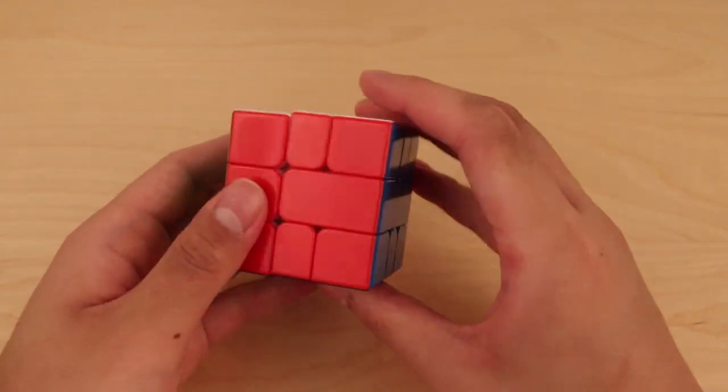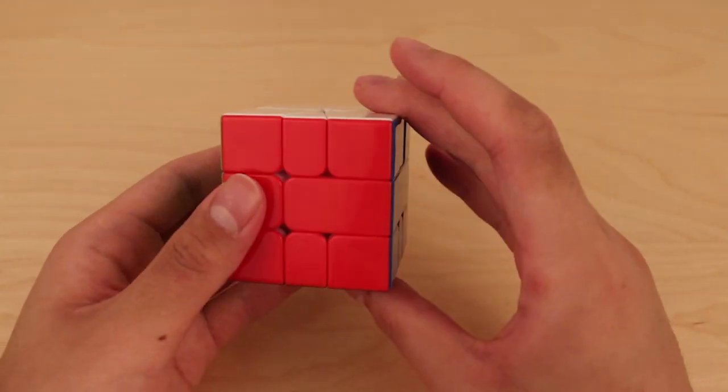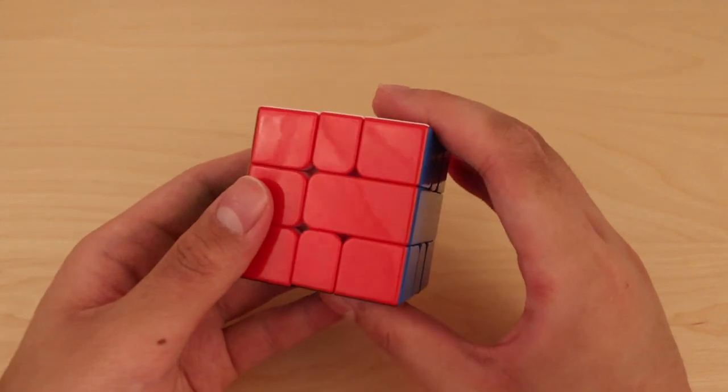If you're turning like this though, how do you do U and D moves? Since this grip is a bit awkward and different from the Rubik's Cube, you're going to have to be a bit more creative for the U and D moves.